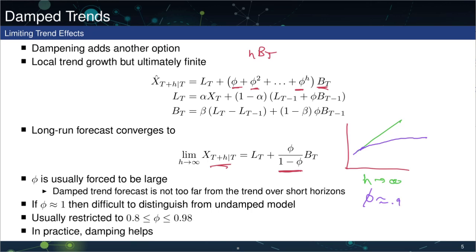In practice, this is shown to be a useful property. We usually want phi to be large, but not too large. If phi is close to 1, it's difficult to tell the difference between damped and non-damped trends. On the other hand, if phi is very small — close to 0 — Holt's model reduces to standard simple exponential smoothing. The common practice is to restrict phi to lie in the range from about 0.8 to 0.98. If phi ends up particularly small, you might want to use simple exponential smoothing; if particularly large, just use Holt's model.